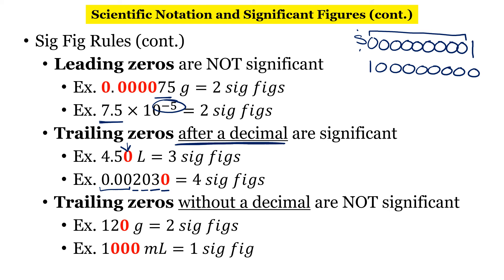In the final rule: when we don't have a decimal, trailing zeros are not significant. In the first example, there's no decimal place, so only the 1 and the 2 matter. In the final example, we have three zeros and no decimal point, so the only number that matters is that first one.